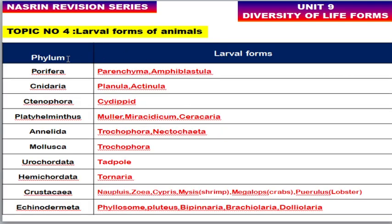The next topic is larval forms of animals by phylum. Porifera — larval forms are parenchymula and amphiblastula. Platyhelminthes — larval forms include Müller's larva, miracidium, and cercaria. Annelida — the larval form is trochophore larva or nectochaeta. Mollusca also has trochophore larva. Urochordata — larval form is tadpole. Hemichordata — larval form is called tornaria.